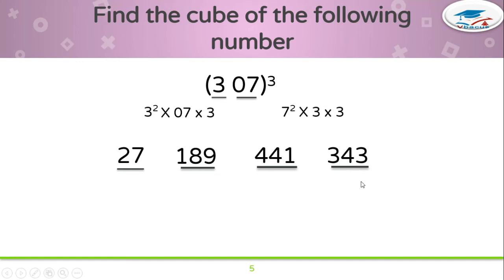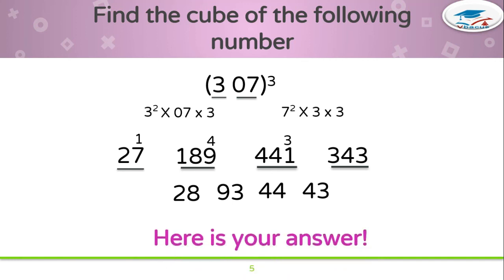So let us see how we will write: 43, and 3 will be carried forward to 441. 441 plus 3 will become 444, and write 44, and this 4 will be carried forward to 189. 189 plus 4 will become 193. Write 93, and 1 will be carried forward to 27. 27 plus 1 is 28. So your answer will be 28,934,443. This is your final answer.